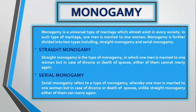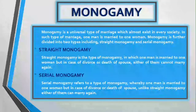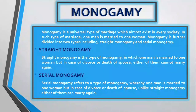death of a spouse, either of them cannot marry again. Serial monogamy refers to a type of monogamy whereby one man is married to one woman, but in case of divorce or death of a spouse, unlike straight monogamy, either of them can marry again.